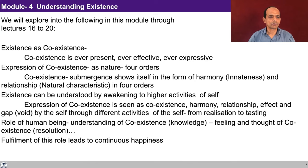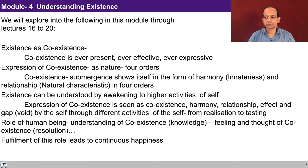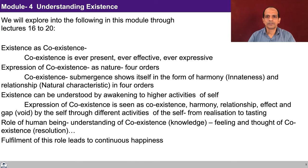In lecture 17, we'll see how coexistence expresses itself as nature in terms of four orders — how the submergence shows itself in the form of harmony, that is innateness, and relationship, that is natural characteristic in the four orders. Existence can be understood by awakening to the higher activity of the self. The expression of coexistence is seen as coexistence, harmony, relationship, and also effect and gap, as seen by the self through different activities — from realization to testing. The self can realize the coexistence, understand the harmony, contemplate on the relationship, compare and analyze the effect of one unit on another, and also sense the gap between two units.